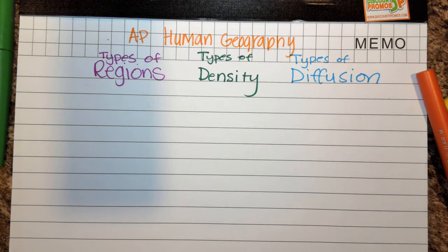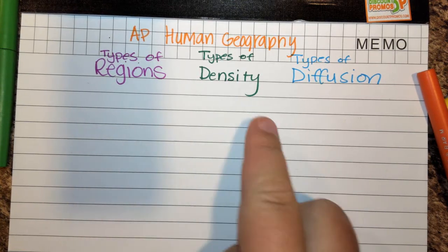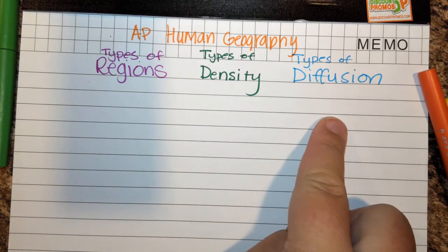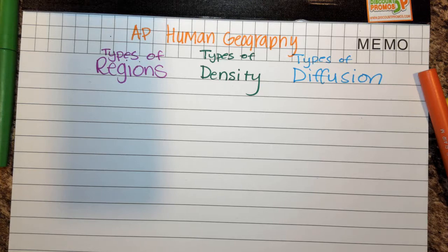Today we are looking at some concepts of AP Human Geography, such as different types of regions, types of density, and types of diffusion. I wanted to make a video about this because you generally need to know why we have different types of regions, what the different types of density are used for, and what the different types of diffusion are used for.